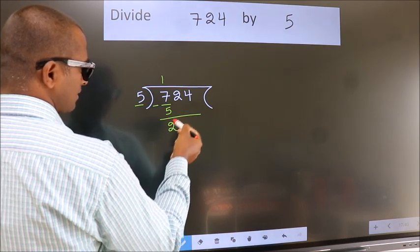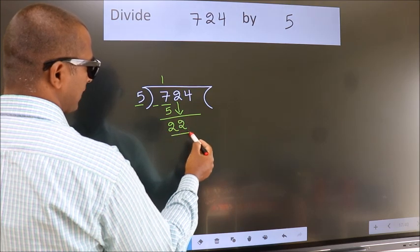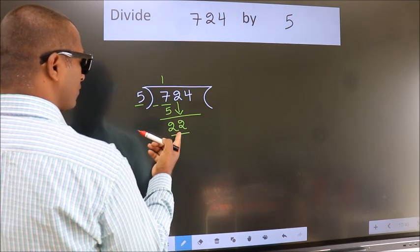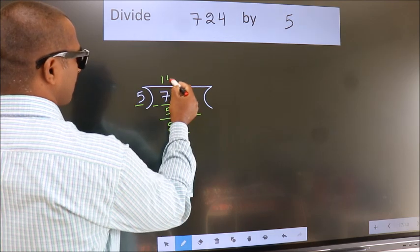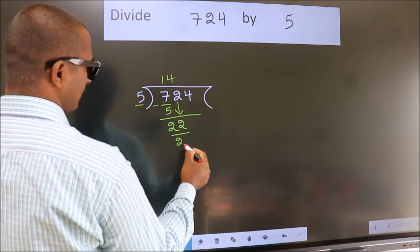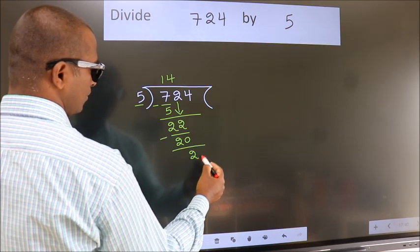After this, bring down the beside number. So, 2 down. So, 22. A number close to 22 in 5 table is 5 times 4 is 20. Now, we subtract. We get 2.